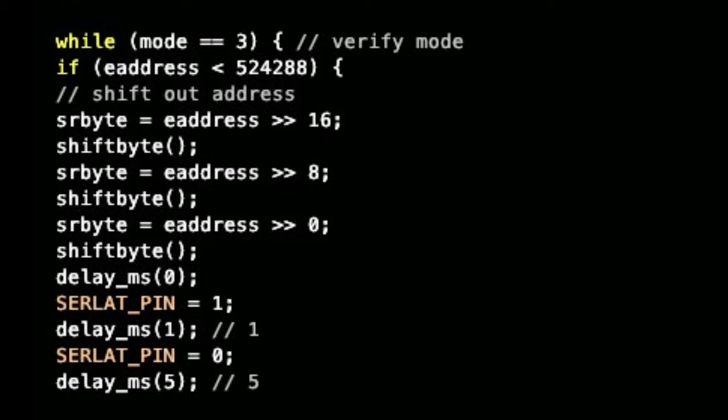While mode equals 3, which is verify mode, and EEPROM address is below the 1 megabyte range for the address to overflow, basically forms an AND gate. It's prevented from running at start up because one of the inputs isn't true and that's the mode. The mode is set to 3 by a button scanning routine in mode 0, which is the idle mode.